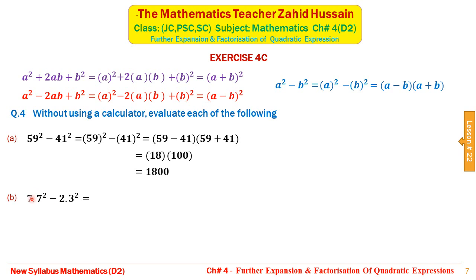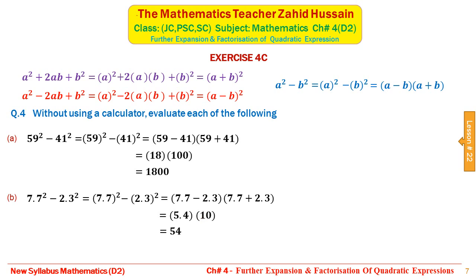Similarly, 7.7² − 2.3² is already in the form a² − b². This can be written as (7.7 − 2.3)(7.7 + 2.3). Evaluating: 7.7 − 2.3 = 5.4 and 7.7 + 2.3 = 10, so multiplying gives 54. These questions are all about factorization using special algebraic identities. These questions can also be solved by using factorization of quadratic expressions if possible.